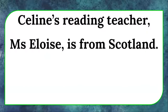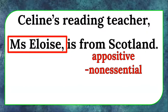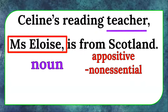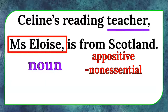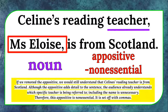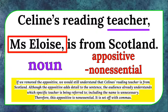Celine's reading teacher, Miss Eloise, is from Scotland. The appositive is "Miss Eloise." It is non-essential. It refers to the noun "teacher." If we remove the appositive, we would still understand that Celine's reading teacher is from Scotland. Although the appositive adds detail, the audience already understands which specific teacher is being referred to. Including the name is unnecessary. Therefore, this appositive is non-essential. It is set off with commas.